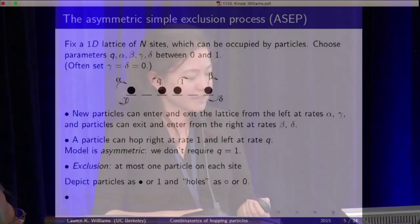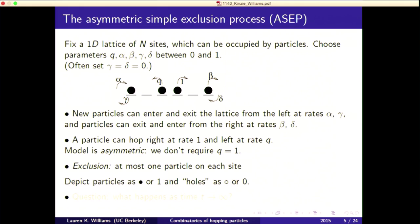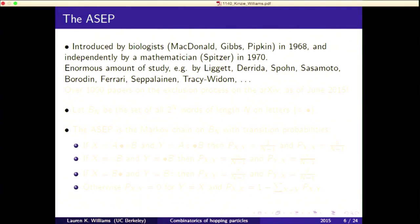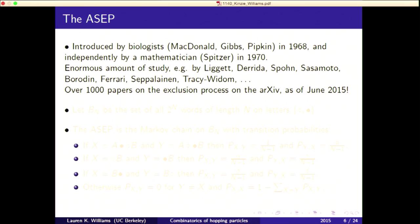Particles will be depicted as black circles or ones, and holes as circles or zeros. A basic question is: what happens as time goes to infinity? What kind of distribution do you expect? This model was actually introduced by biologists in 1968, trying to come up with a model for translation and protein synthesis. More or less at the same time, it was introduced independently by a mathematician, Spitzer. There have been over 1,000 papers on the exclusion process on the archive.